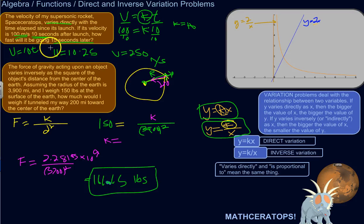That's direct and inverse variation — how you translate those types of problems into equations. They're pretty fun and useful. In science, quite often instead of stating the full equation, scientists will say 'such and such varies inversely as such and such,' so it's important to know what they mean.